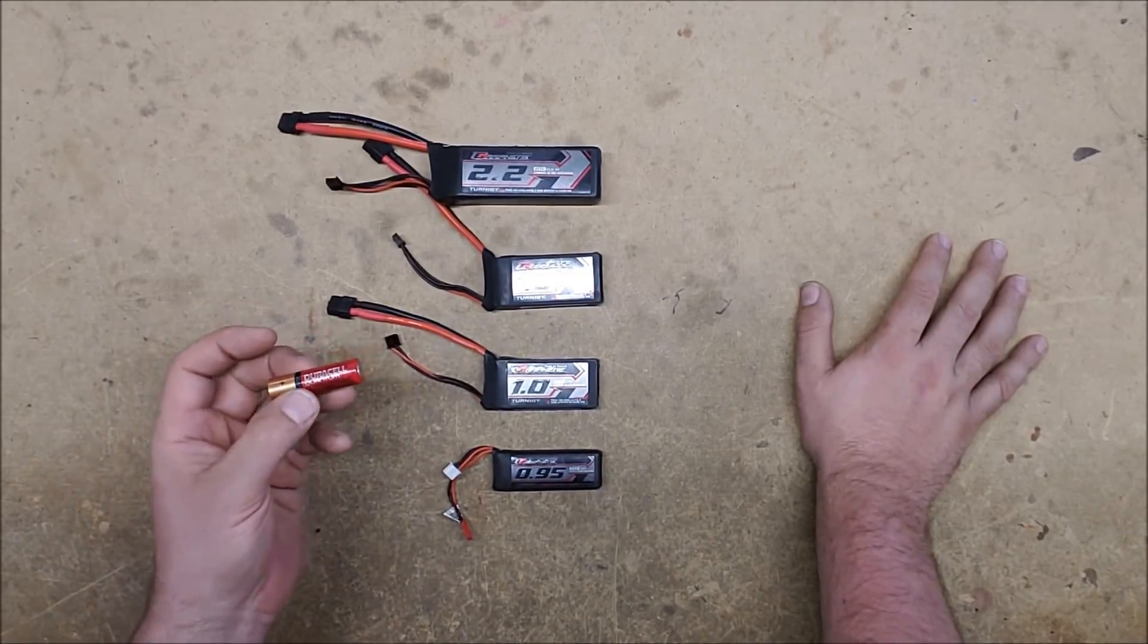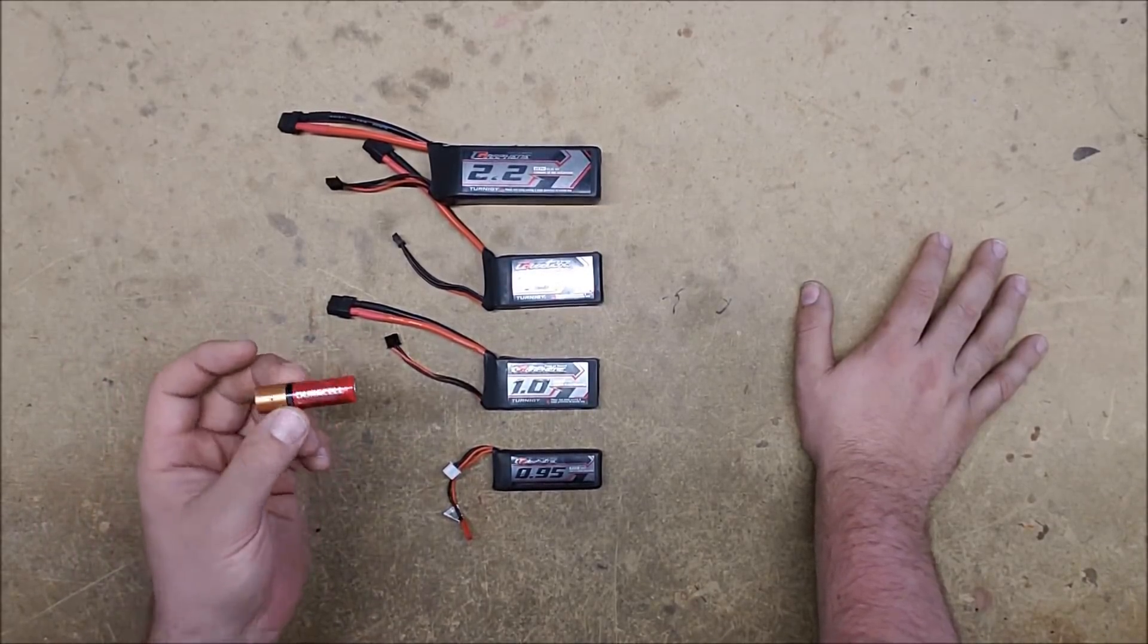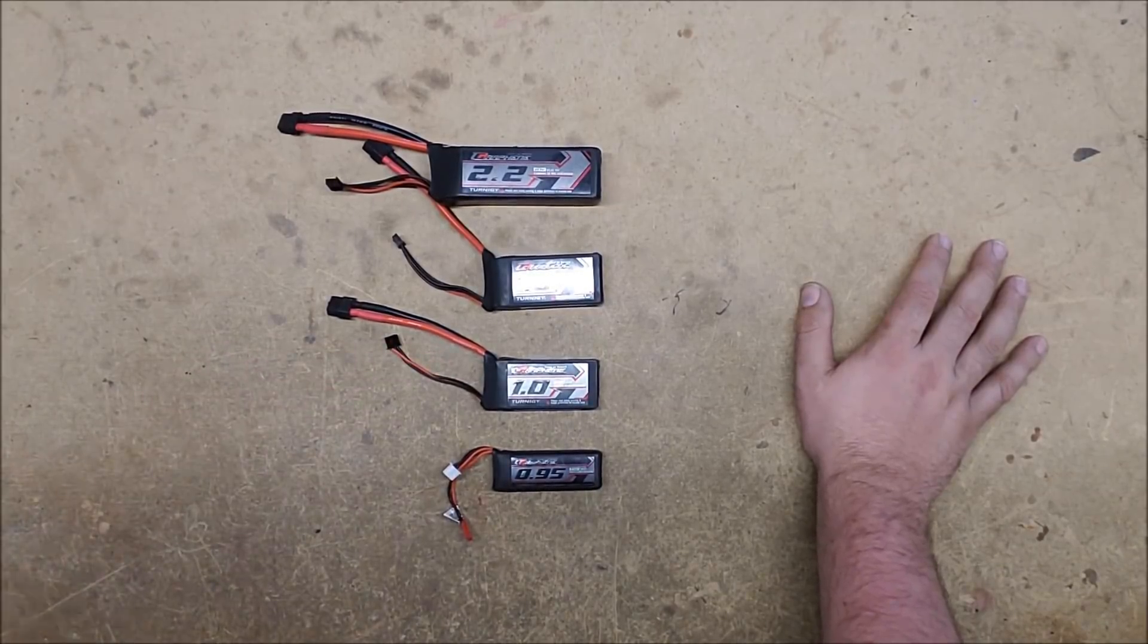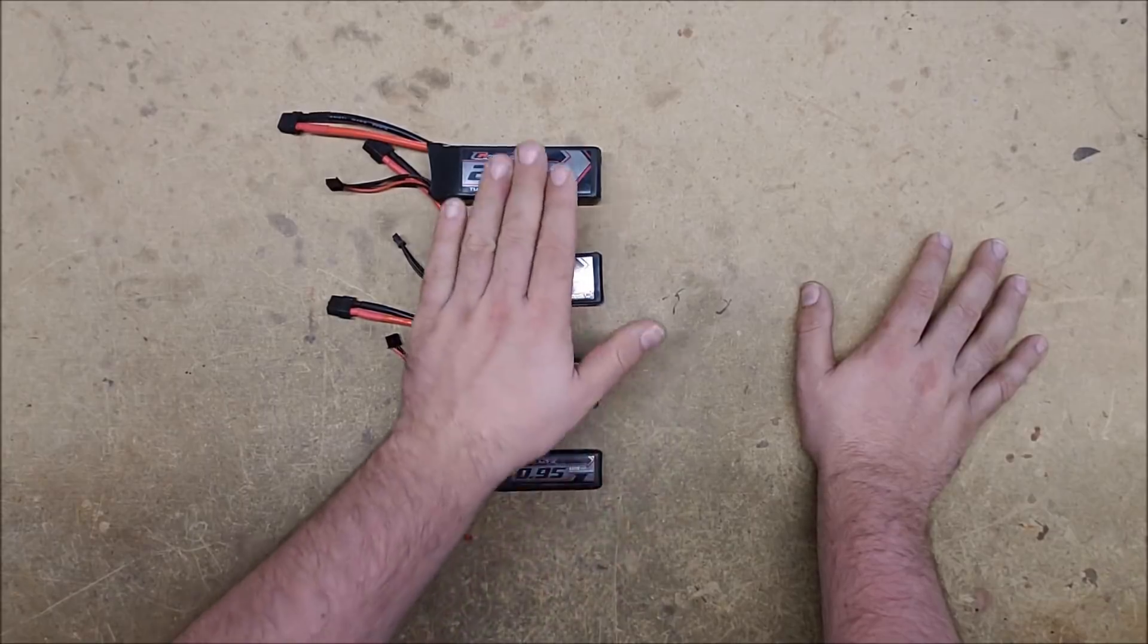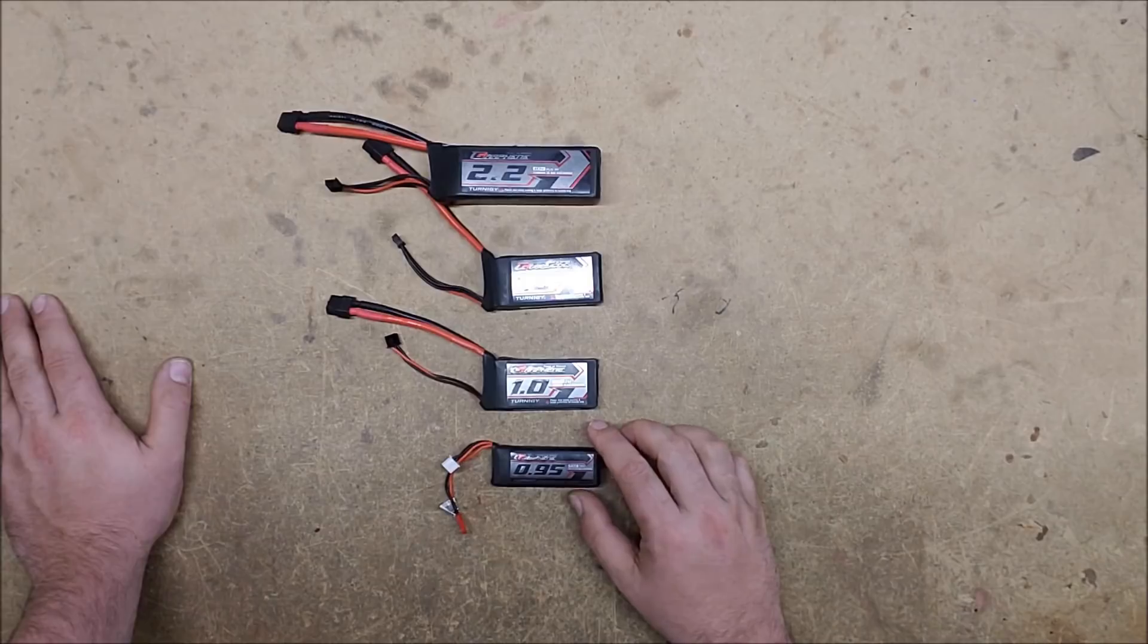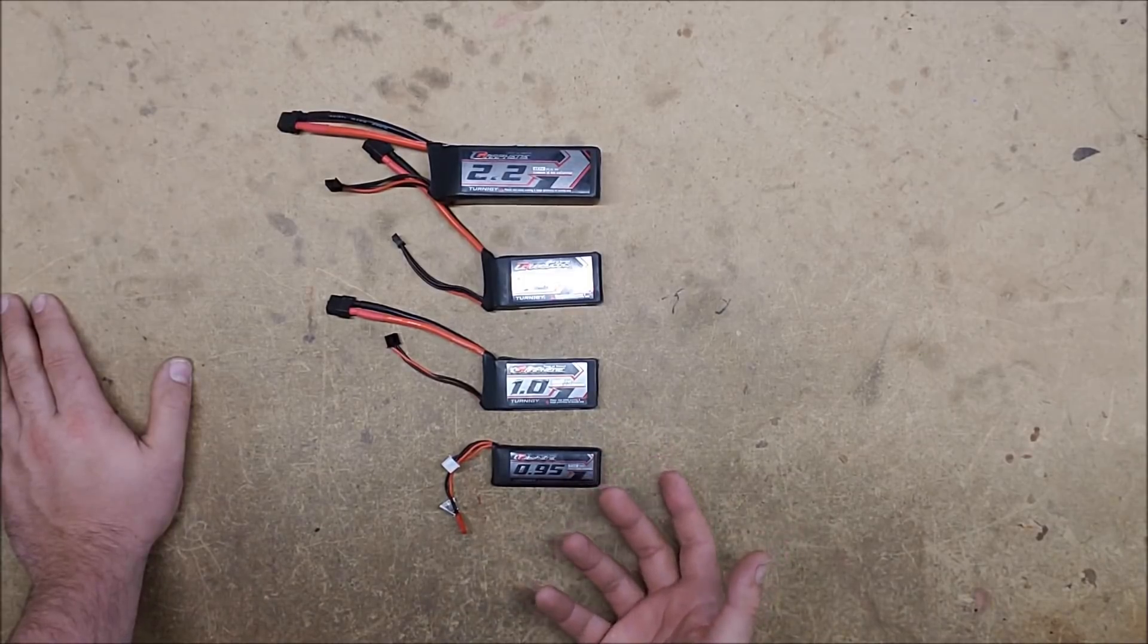And so now the definition of a battery includes one or more cell. So these are now technically officially batteries. But in the traditional sense, these would have been batteries because they have multiple cells. Now they do make single cell lithium polymer batteries, but we generally don't use those because they're only 3.7 volts.